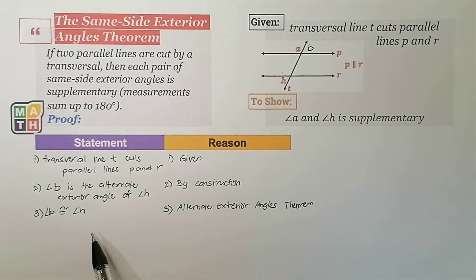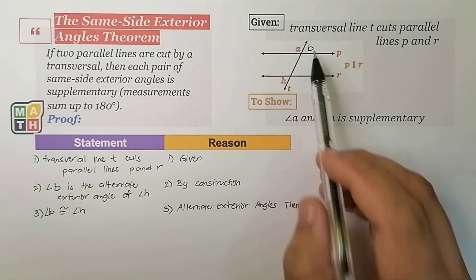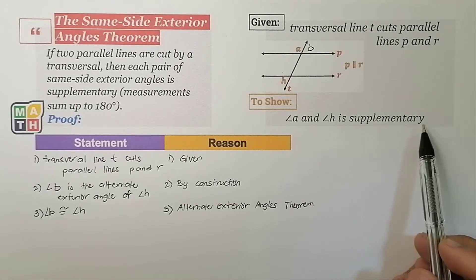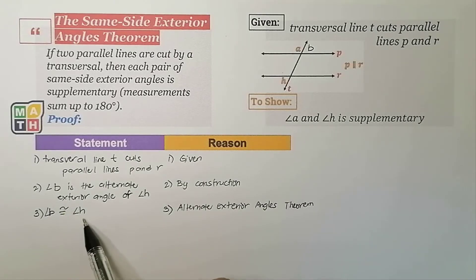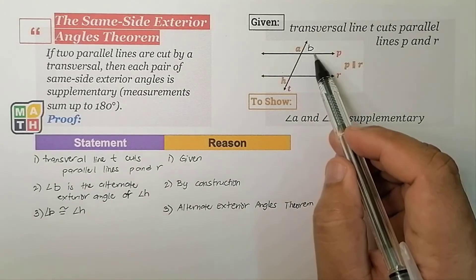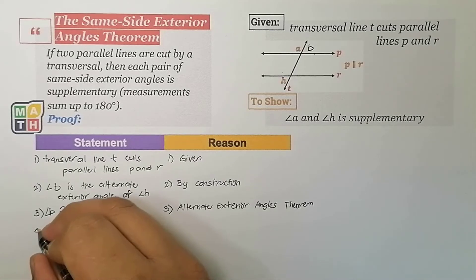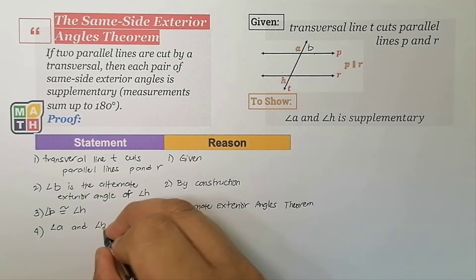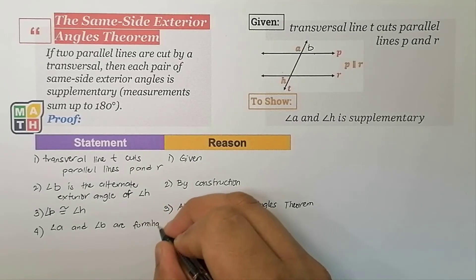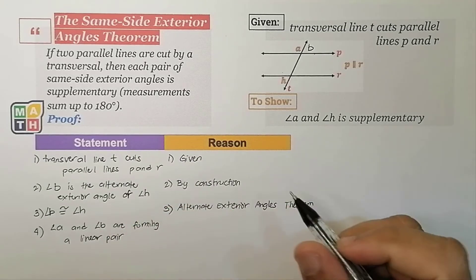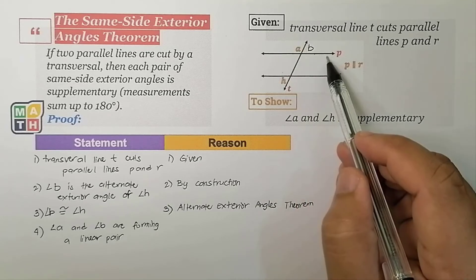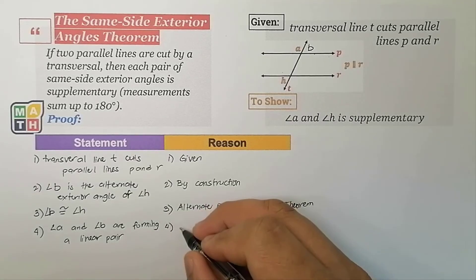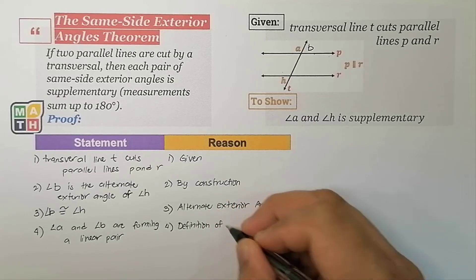Next, I need to make a case for the relationship of angle A and angle B, since the intended output is to show that angle A and angle H are supplementary. I haven't made a case for angle A yet, so I'll use the added angle B. Looking at the figure, angle A and angle B form a linear pair — two adjacent angles forming a straight angle — and that is the definition of a linear pair.